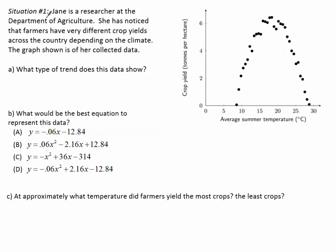Let's take a look at situation number one. Jane is a researcher at the Department of Agriculture. She has noticed that farmers have very different crop yields across the country depending on the climate. The graph shown is of her collected data. Notice the x-axis says the average summer temperature, and the y-axis shows the crop yield for the farmers. Part A, what type of trend does this data show?